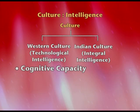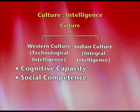Let us look at the four components. The first is cognitive capacity — exactly the same as what technological intelligence deals with: mind, thoughts, problem solving, and mental processes. The second is social competence. This is where integral intelligence, or buddhi, comes into picture. We call it integral because we are combining all four components and giving a holistic picture of intelligence.